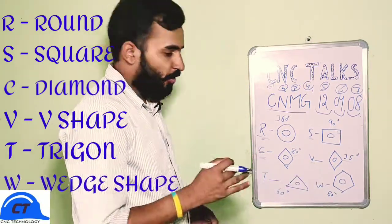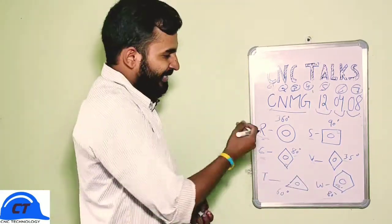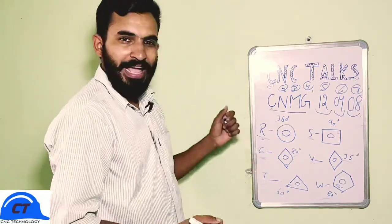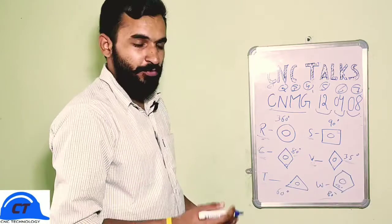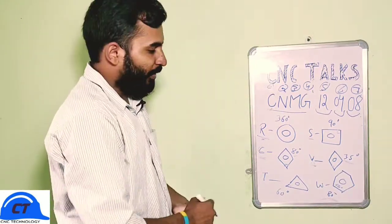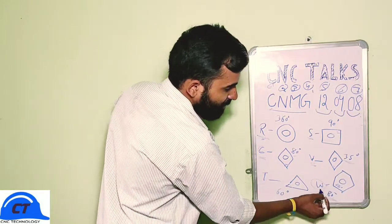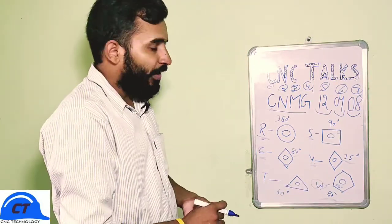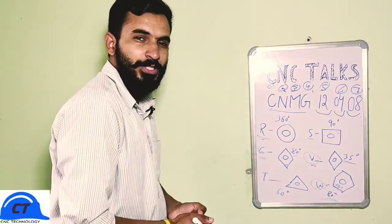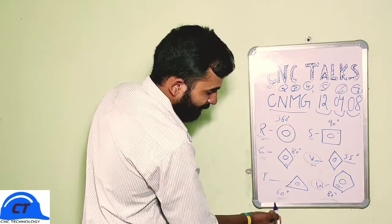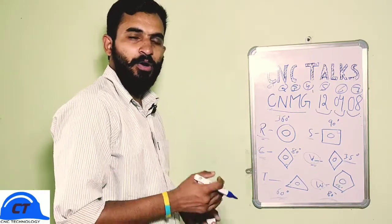W defines a wedge-shape insert with an angle of 80 degrees between its two faces. Different shapes of inserts have different uses. As the angle increases — for example, the wedge-shape insert at 80 degrees — those inserts can be used for roughing. The V-shape insert with 35 degrees is mostly used for finishing. Mid-range inserts like the T-shape insert at 60 degrees can be used for both finishing and roughing.